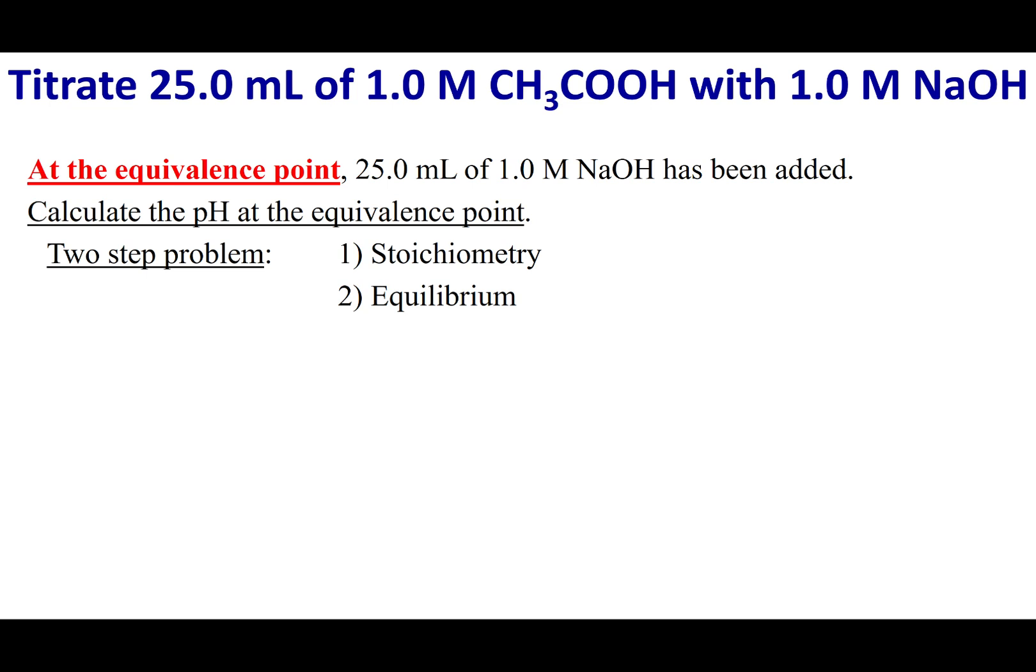But just to do a quick reminder, what we're trying to do is titrate a weak acid with NaOH. In the particular problem we set up, we have 25 mils of 1.0 molar acetic acid. And to that, we are using a one molar solution of our strong base, NaOH.